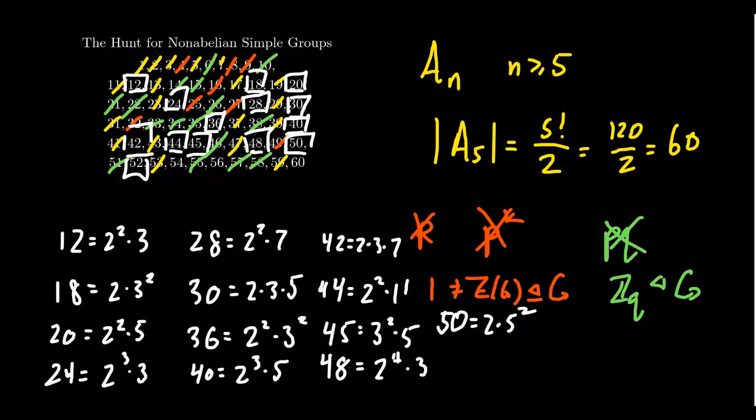And so the remaining numbers we have on our list, 52 factors as 2 squared times 13. 54 factors as 2 times 3 cubed. 56 factors as 2 cubed times 7. And then the last one is 60 itself. We actually know there's a non-abelian simple group of order 60, which is A5.